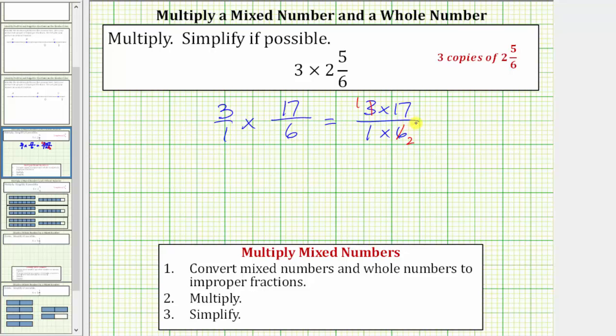The only remaining common factor between the numerator and denominator is 1, so now we can multiply knowing the product will be in simplified form. 1 times 17 is 17 and 1 times 2 is equal to 2. The product as an improper fraction is 17/2, which is in simplified form.